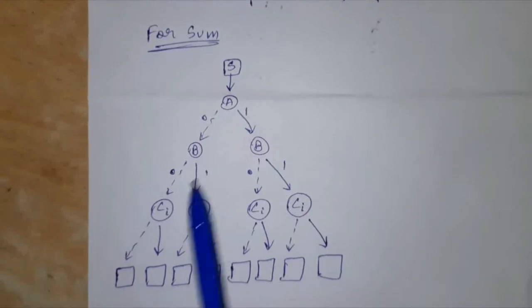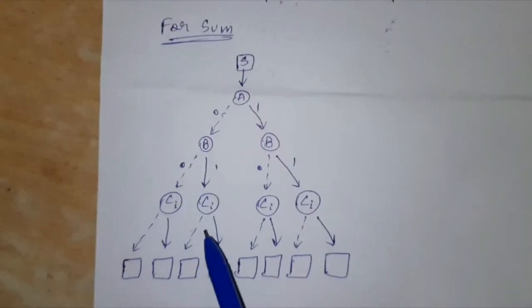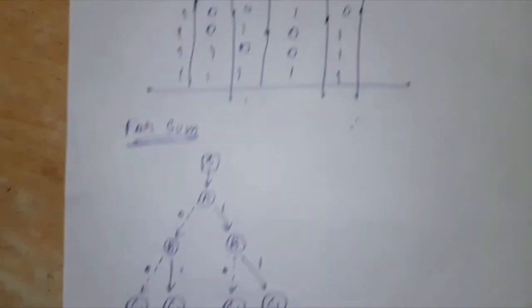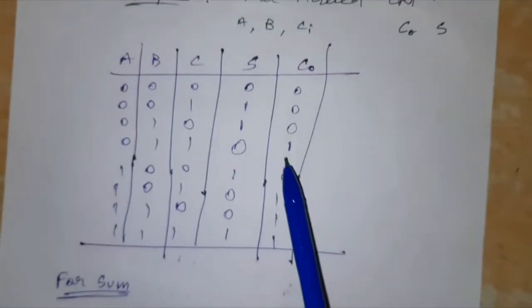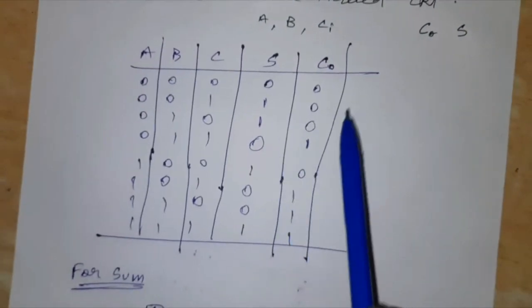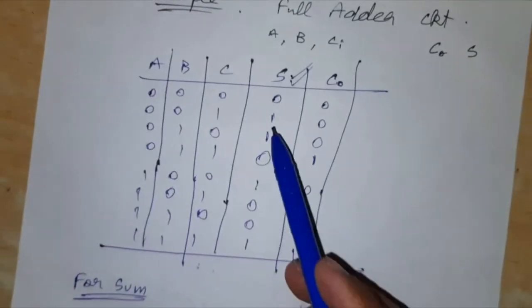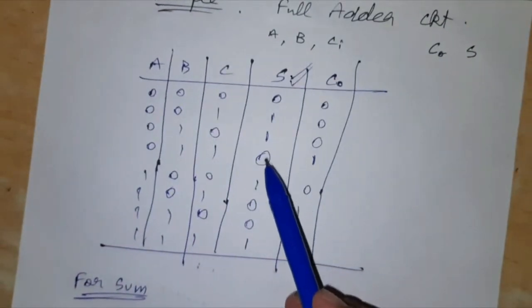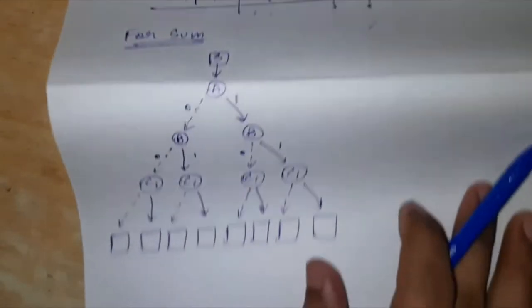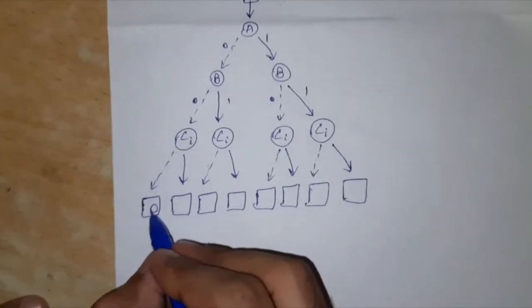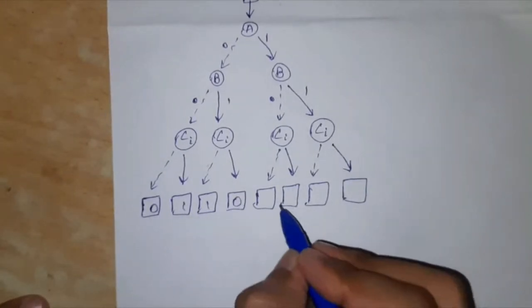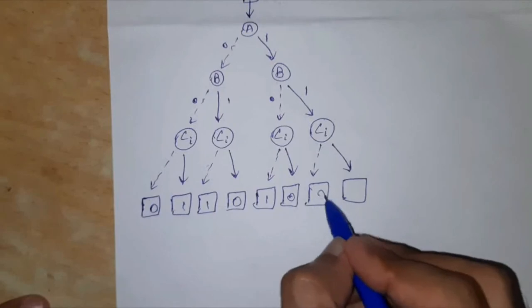Now this is the step 1 BDD diagram we have obtained. So from the truth table, that is for C out we have to follow this one first. So it is for S value 0 1 1 0 1 0 0 1. So just quickly filling out the terminal nodes with these values 0 1 1 0 1 0 0 1.